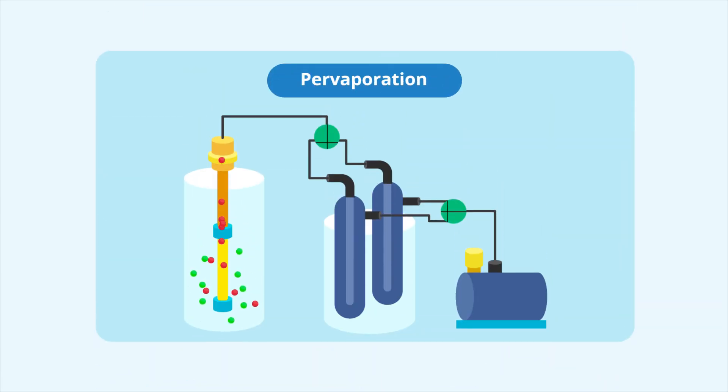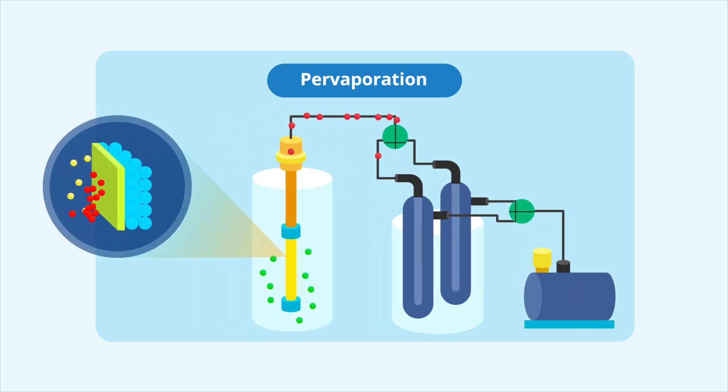This strategy involves separating a mixture through a membrane by maintaining a pressure difference between its two sides, which allows permeants to easily vaporize downstream of the membrane.